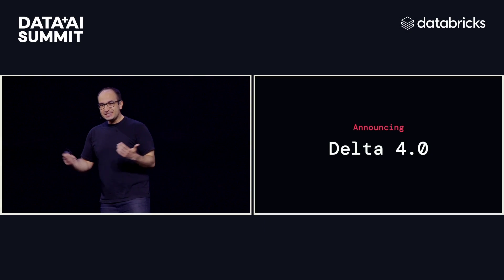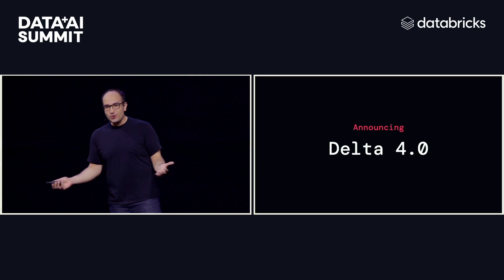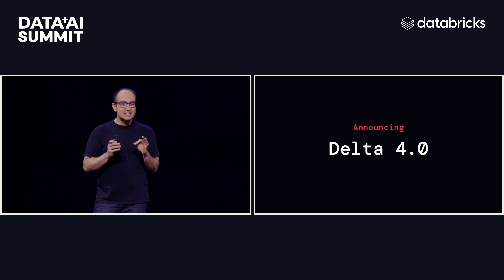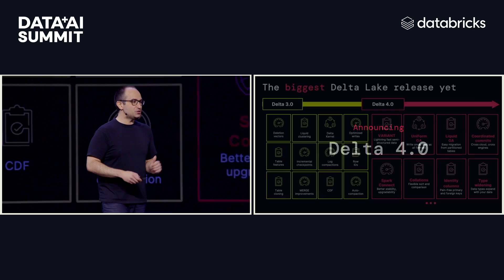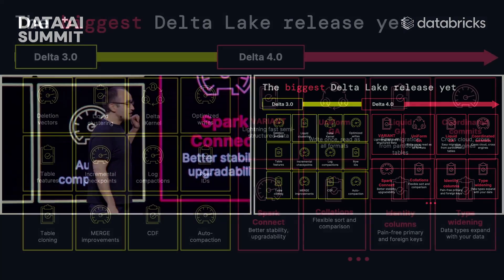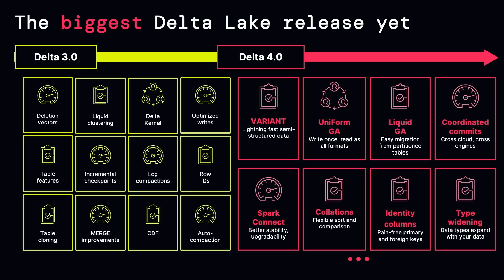We have the branch cut — it's available. Delta 4.0 is the biggest change in Delta since history. It's jam-packed with new features and functionality: things like coordinated commits, collations, all sorts of new functionality that make it easier to work with various different types of data sets. We won't have time to go through all of this, so I'm going to pick a couple and dive into why these are such amazing features.